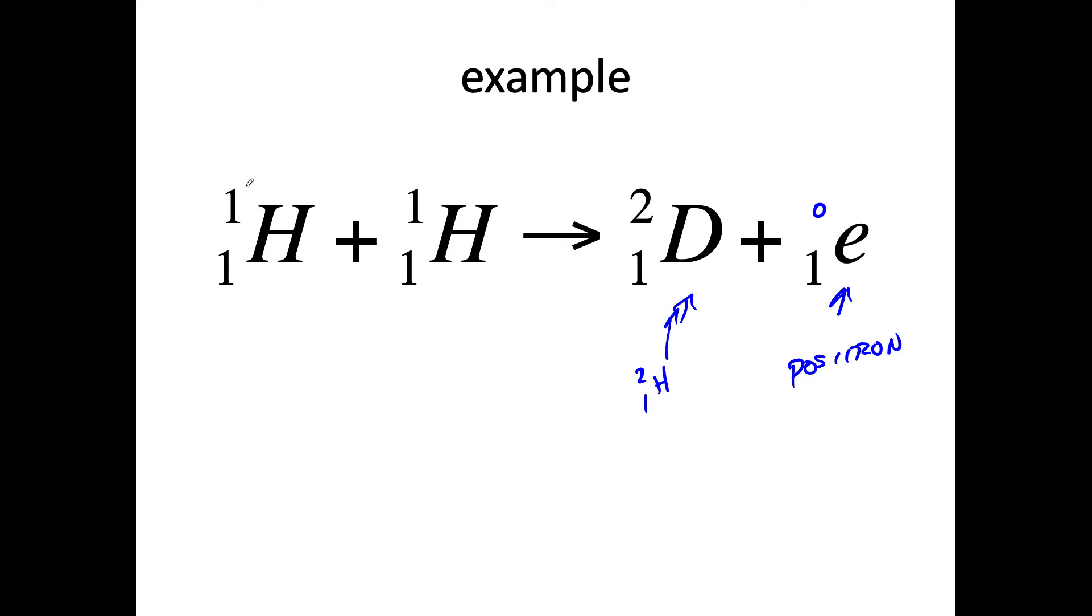And so this is an example. So 1 plus 1 is equal to 2. 2 plus 0 is equal to 2. So mass is equal, 2 equal to 2. We're good to go. 1 plus 1 is equal to 2. This is mass. This is protons. 1 plus 1 is equal to 2. So they're both equal on both sides.